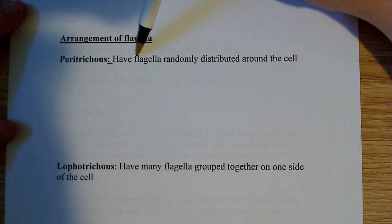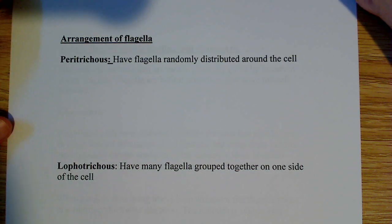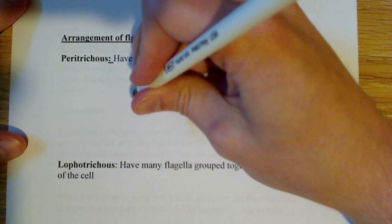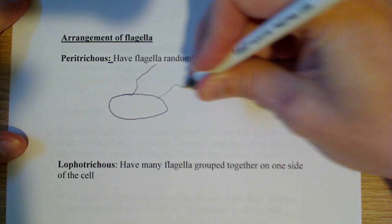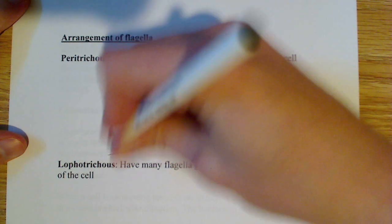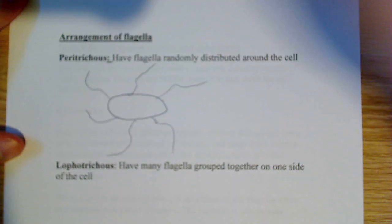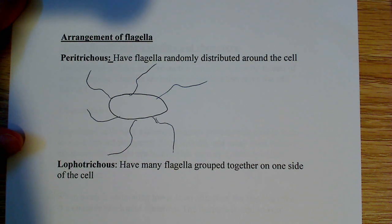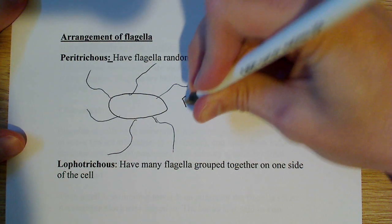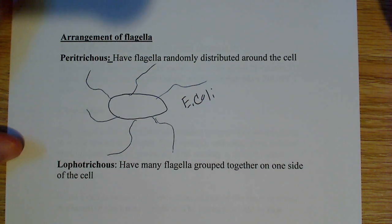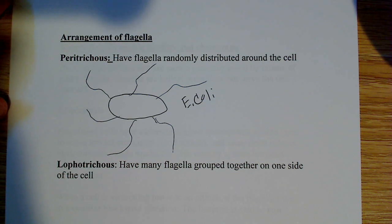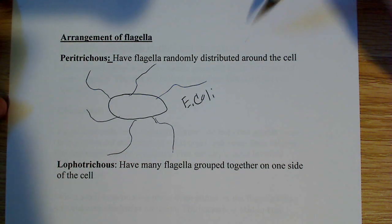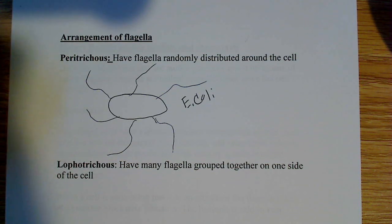There's peritrichous — peritrichous have flagella randomly distributed around the cell. So essentially, these rotary flagella are kind of randomly distributed around the entire cell. An example of this is E. coli. E. coli is one of the bacteria that actually has this peritrichous, randomly distributed flagella around the cell.